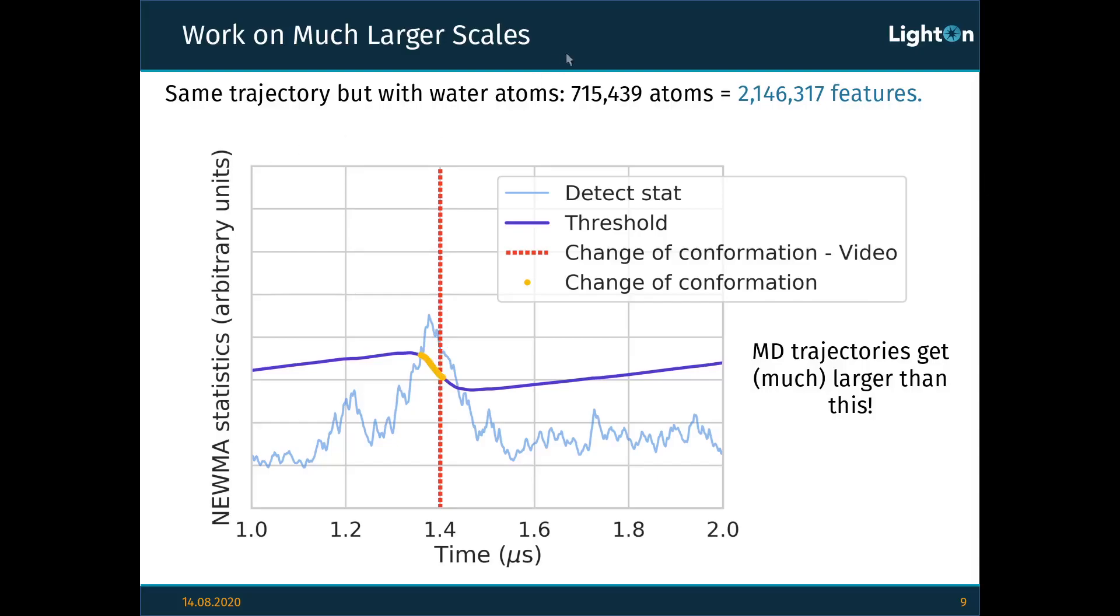Now, you might be thinking that 700,000 atoms is a lot. However, molecular dynamics trajectories usually deal with millions of atoms, and it is even predicted that in the future they will be able to simulate over billions of atoms. So 700,000 really isn't that much, and we'll be ready to analyze them using LightOn Aurora OPU.